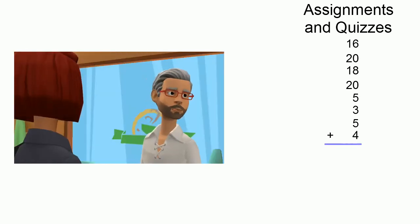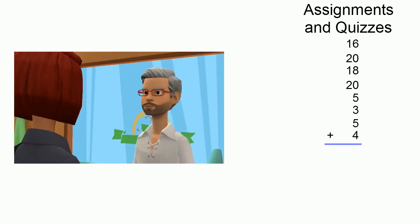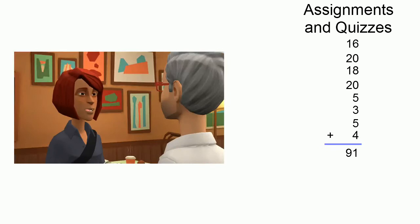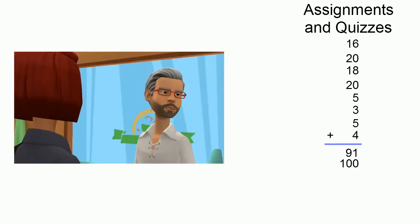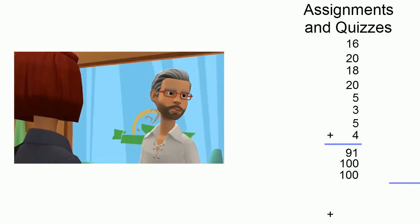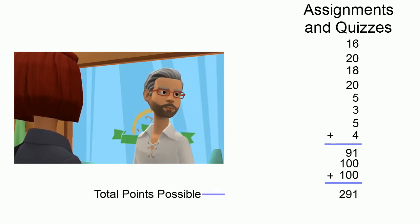We'll add all those up and get 91. That's your assignment point total. Okay. Now we'll add 100 points for the midterm and 100 points for the final. That means your grade will be based out of 291 possible points.